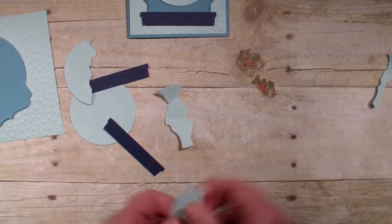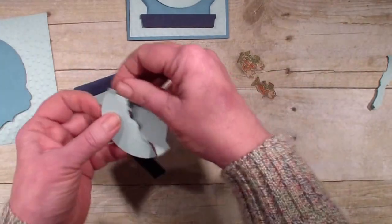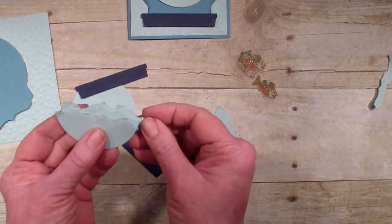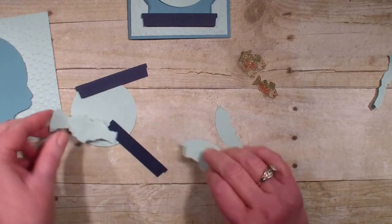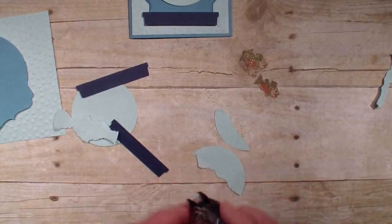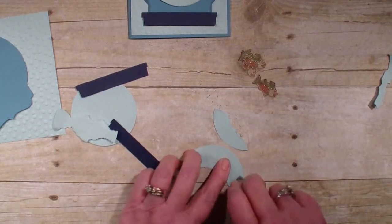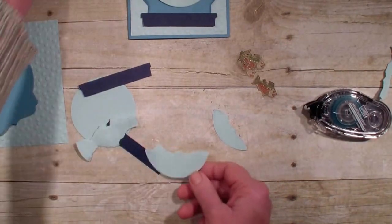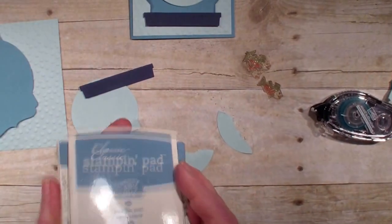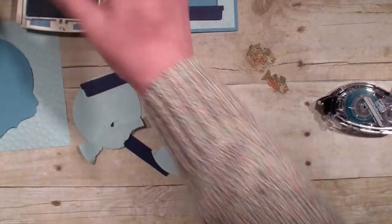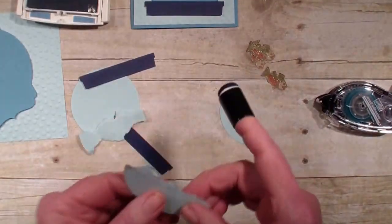Then I'm simply going to layer them one behind the other, and you need to do a little bit of an adjustment with your scissors. I also took the Marina Mist ink pad with a sponge dauber.